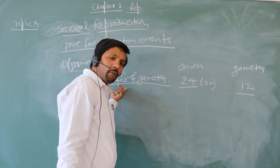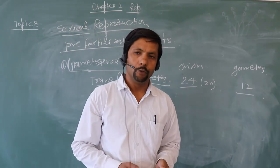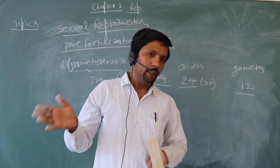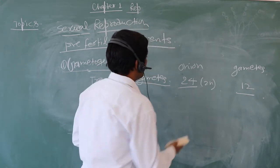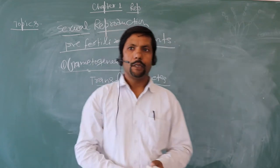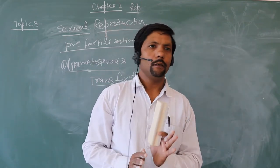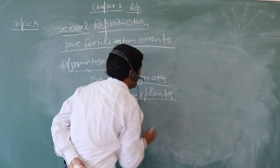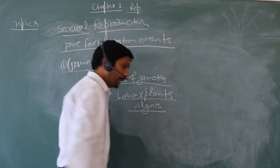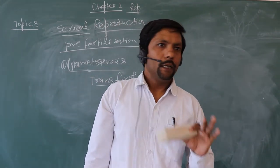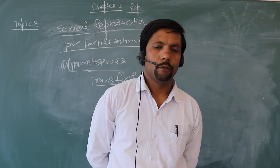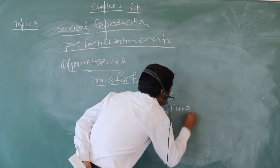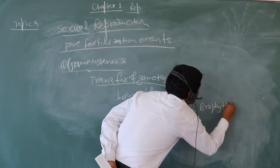Now come to the transfer of gametes. When gametes are produced by the individual, there must be transfer from the male body to the female body, whether in plants or animals. In algae, which generally grow in water, water is the medium for transfer of gametes. In the case of algae, fungi, mosses, and ferns — all lower plants use water for the transfer of their gametes.